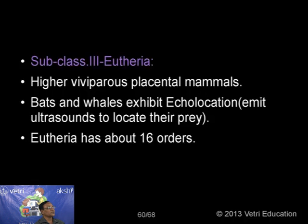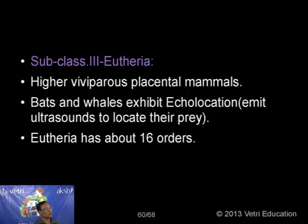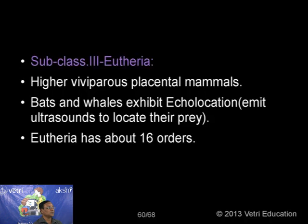Subclass Eutheria — the higher viviparous placental mammals. A peculiar phenomenon observed in bats and whales is echolocation. Bats have poor eyes. They produce ultrasonic sound waves which strike against obstacles and return back to the animal, so they can locate where the obstruction is. This is called echolocation. It is also done by whales.